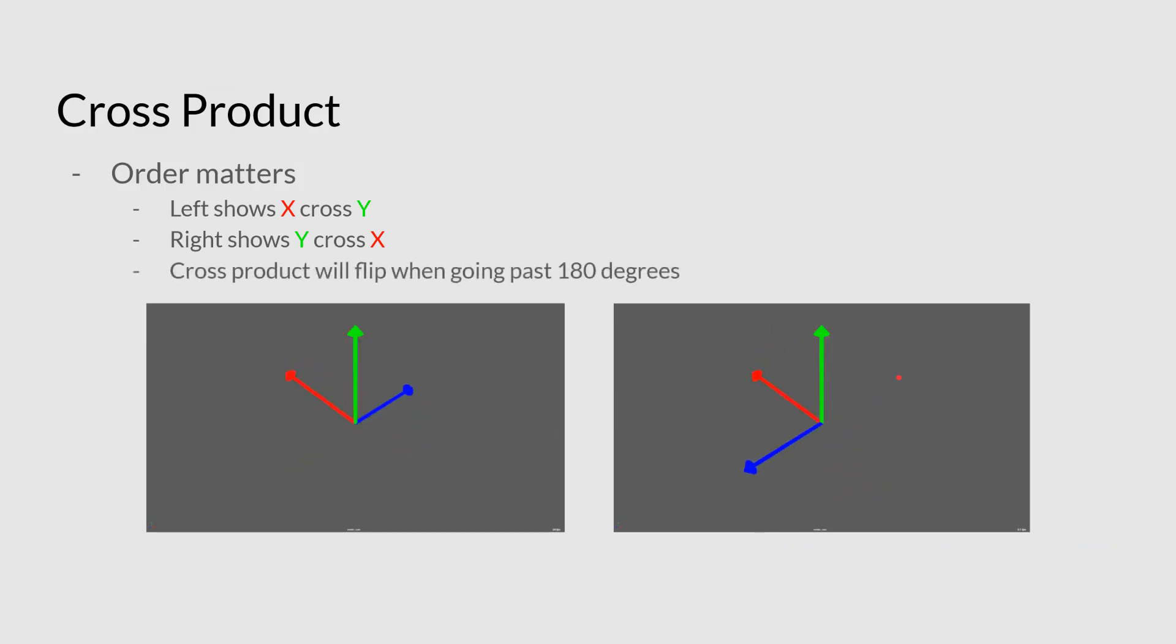So it's really important to kind of have just a bit of an understanding of that. And yeah, like I mentioned, the cross product will flip when we go past 180 degrees because it needs to change the direction because of that.